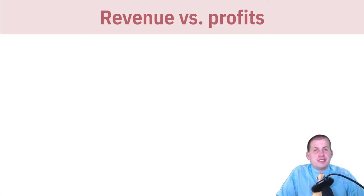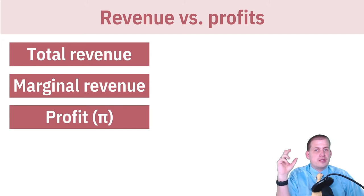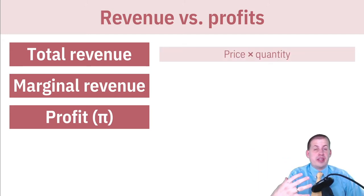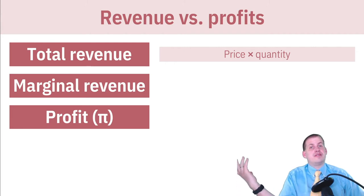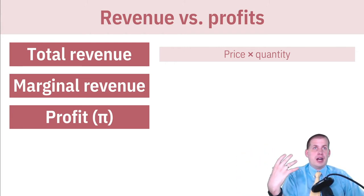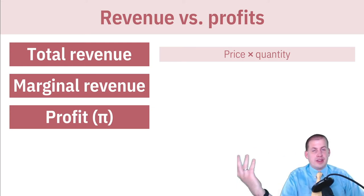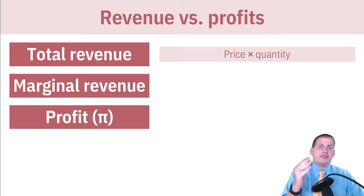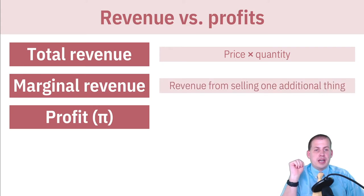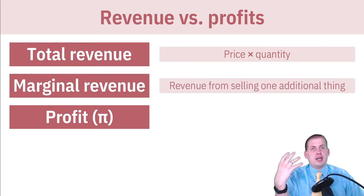Another thing a firm has to pay attention to is prices out in the world and revenue. Total revenue is simply the price of the thing you're selling times how many things you're selling. So if a gourmet waffle costs $5 and you sell 100 of them, your total revenue is $500. Marginal revenue means the additional revenue you get for selling one more unit — one more waffle, one more spoon, whatever product you have.